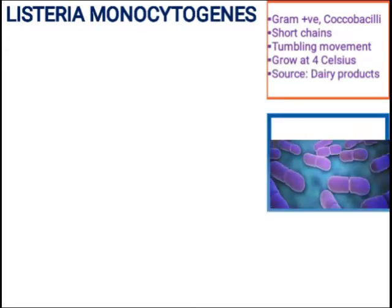If we talk about the appearance of Listeria monocytogenes, we have discussed that it is a coccobacillus which exists in short chain form.